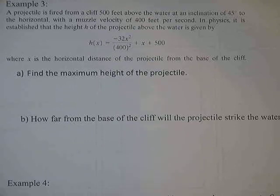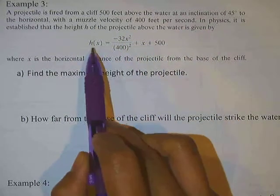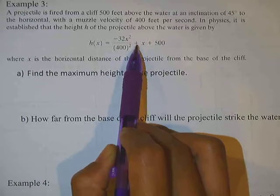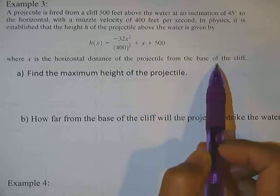Hey guys, here's another example in your section 3.4, Example 3. A projectile is fired from a cliff 500 feet above the water at an inclination of 45 degrees to the horizontal with a muzzle velocity of 400 feet per second. In physics, it is established that the height, represented by variable h, of the projectile above water is given by h(x) equals negative 32x squared divided by 400 squared plus x plus 500, where x is the horizontal distance of the projectile from the base of the cliff.